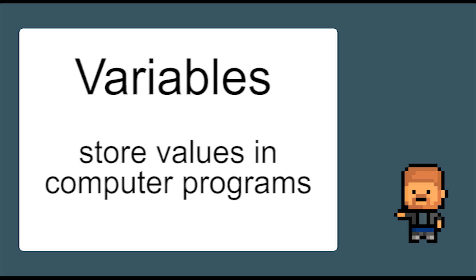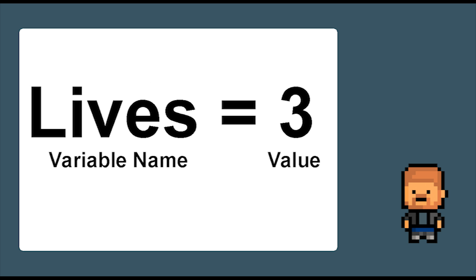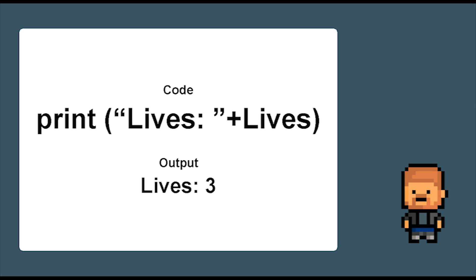In computer programming, variables are the names given to different values. They are a vital part of computer programming, so the sooner we get to grips with them, the better. Imagine you are playing a video game and you have three lives. The variable could be called 'lives' and the value of that variable could be 3. If we asked a computer to print 'lives', it would print the number 3.